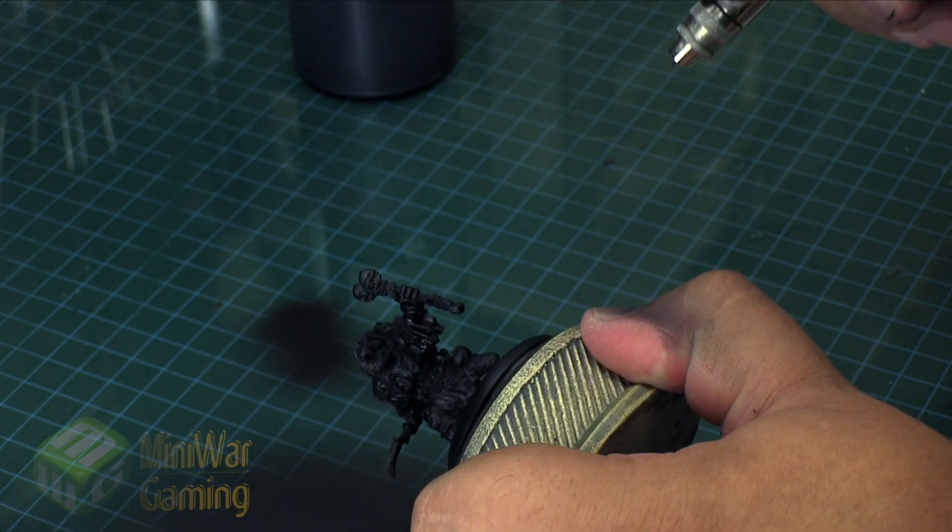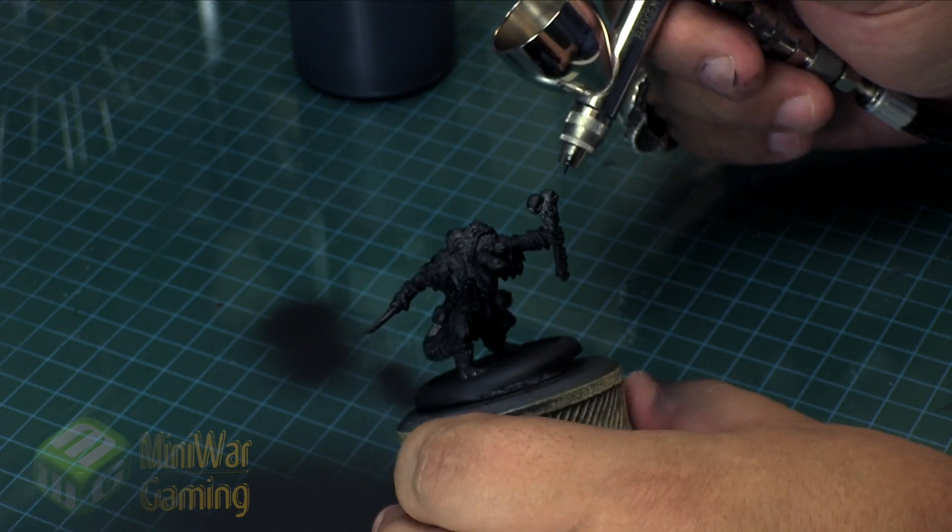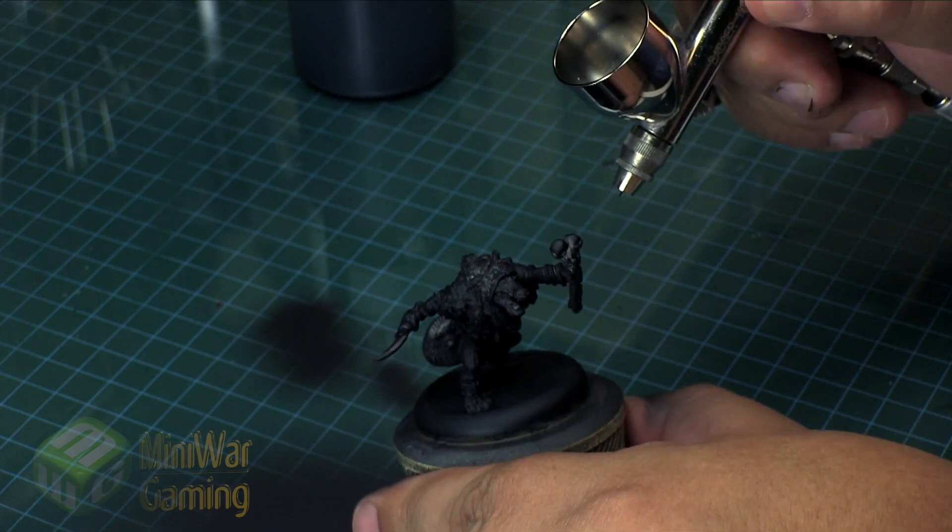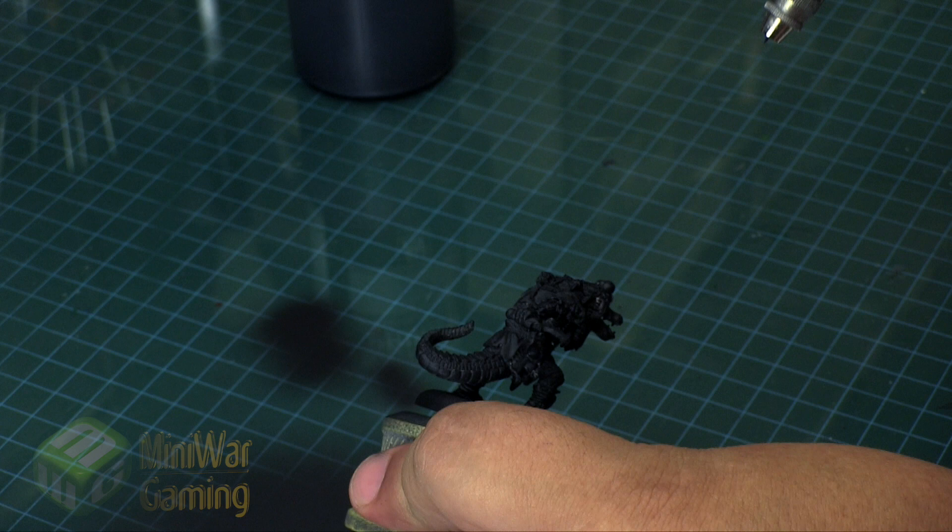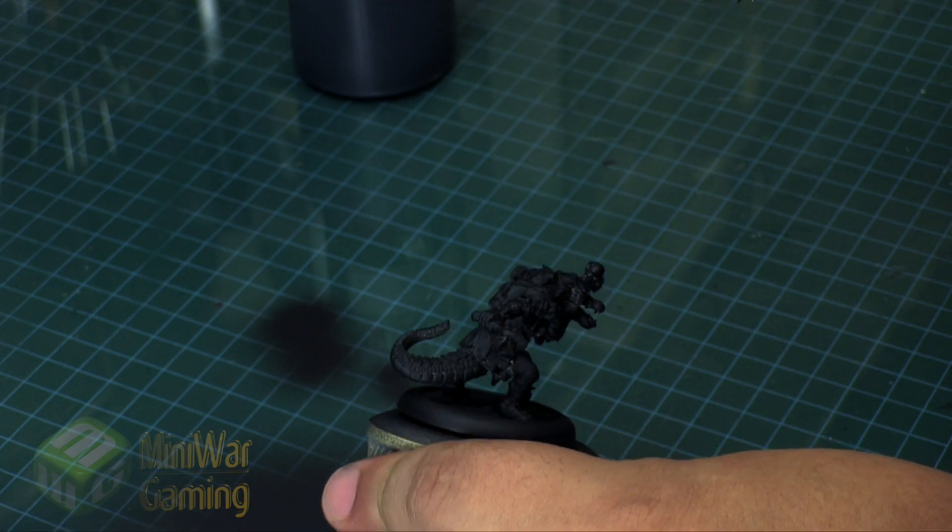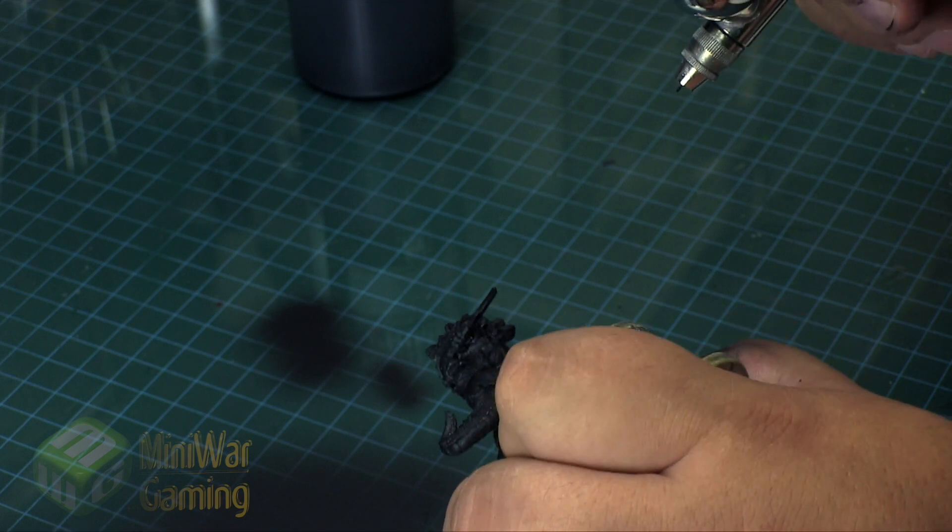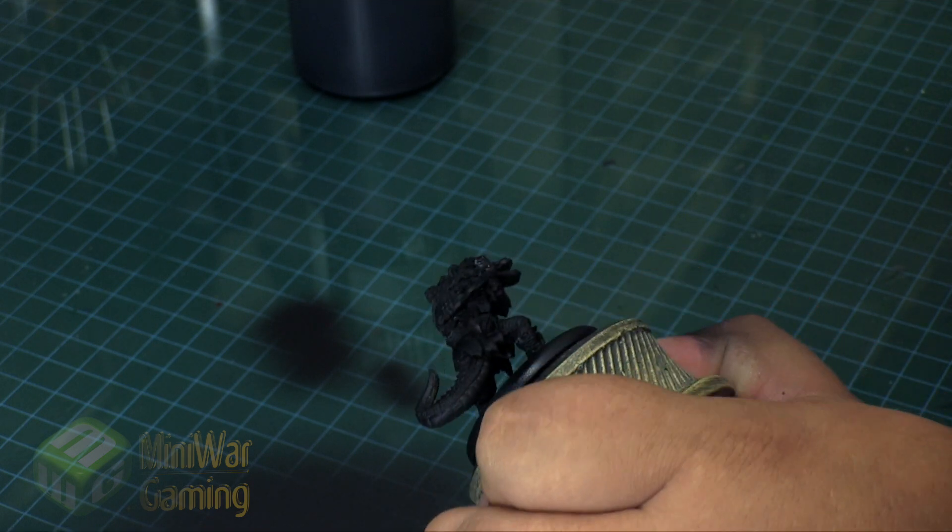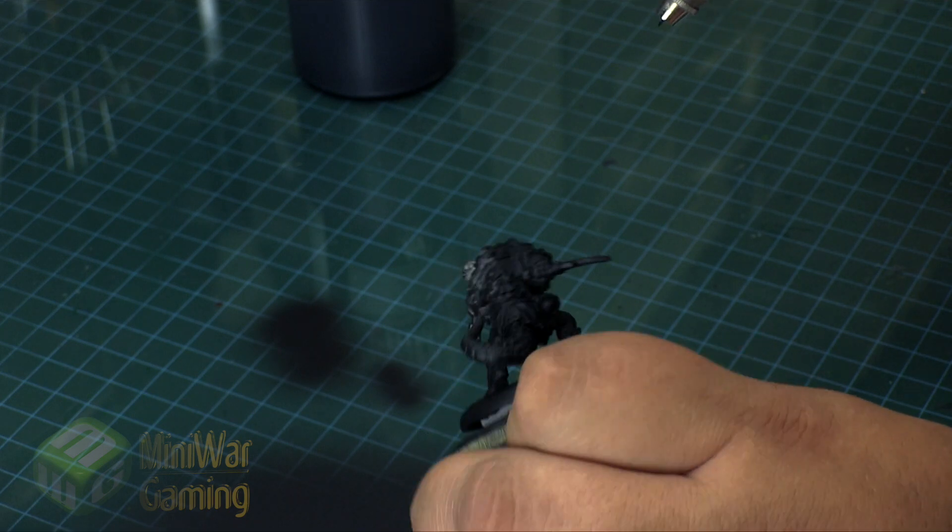As I mentioned before, the tendency is to over prime when you're using a color primer like this, just because you see that metal in some areas and stuff like that. But rest assured, the paint will still go on to the model even in those areas. But if you really have to get some primer in that area, you just work your paint very easily.